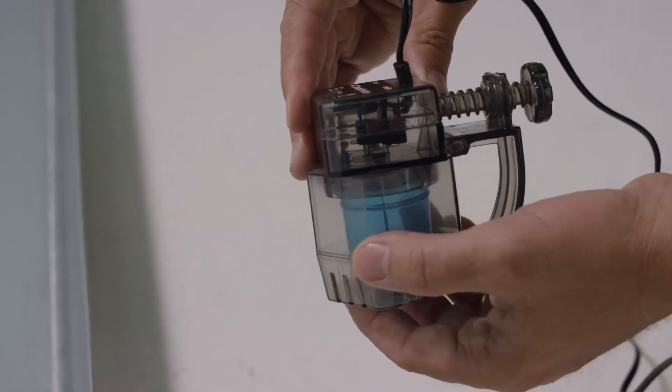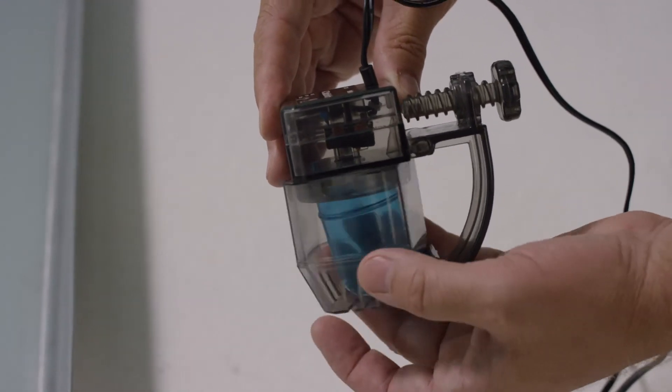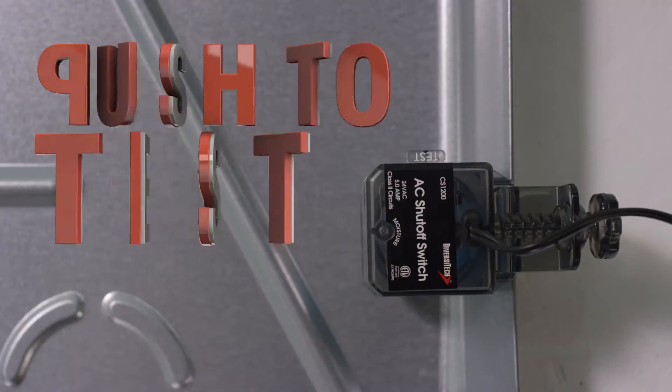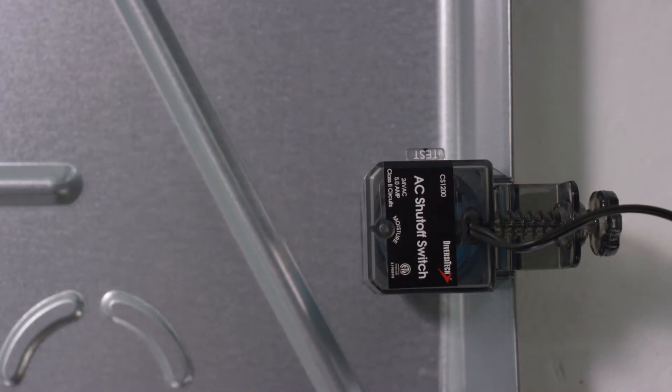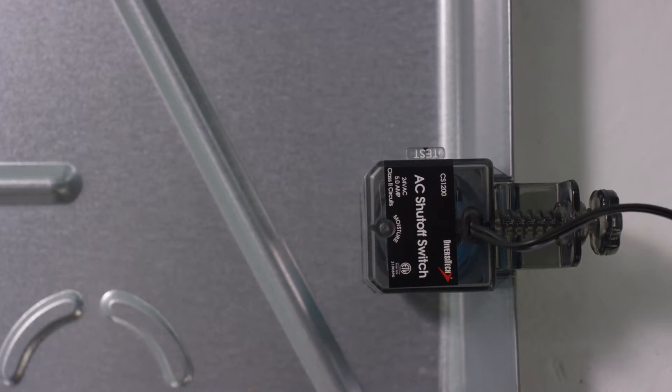Just rotate the clear housing until you find the right angle to match your pan. The CS1200 also offers a push to test feature and is the only pan switch with an LED light indicator for fast troubleshooting.